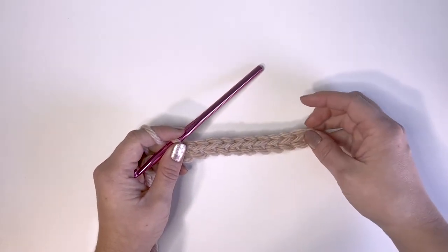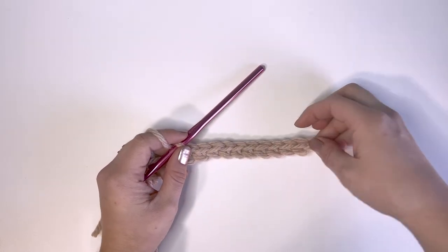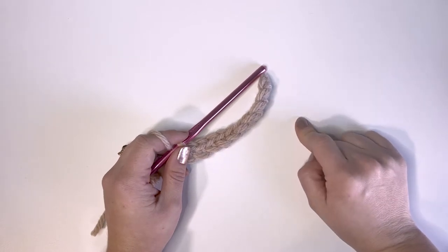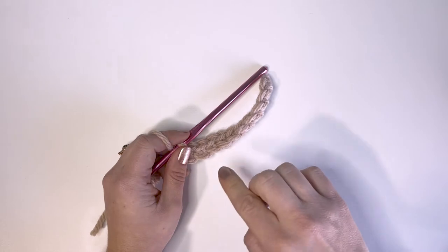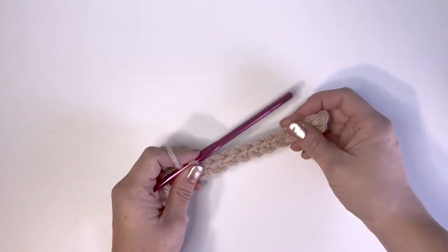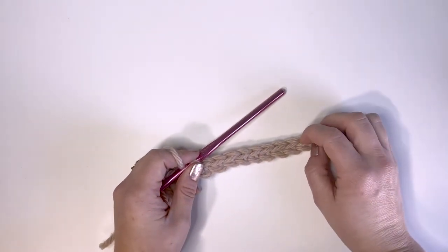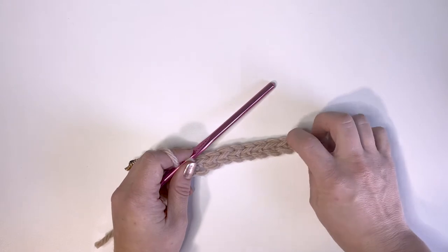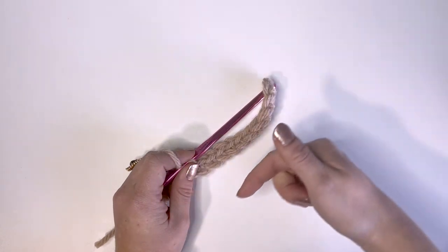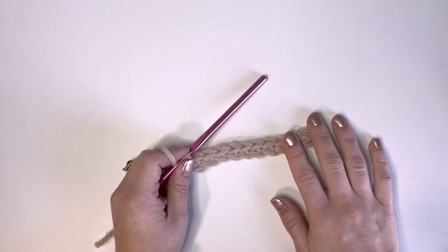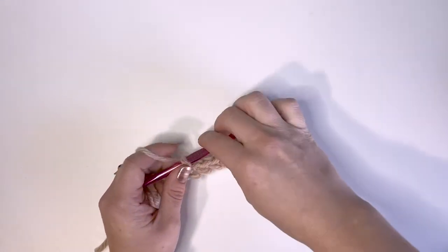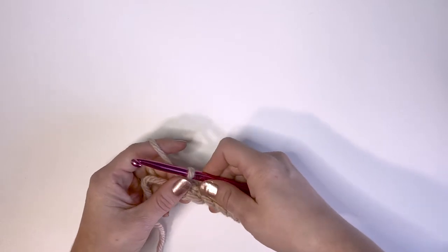And from here, what we're going to do is start our second row. So the chain does not count as a row unless you do one of those foundation crochet stitches. So if I did a foundation single crochet stitch, that would have been my first row. But if you're just starting with a chain and then crocheting into that chain, the chain does not count as a row. When you go back the other direction doing stitches, that is your first row. So we're going to go ahead and learn how to move on to a second row. Let's just do a row of double crochet now.